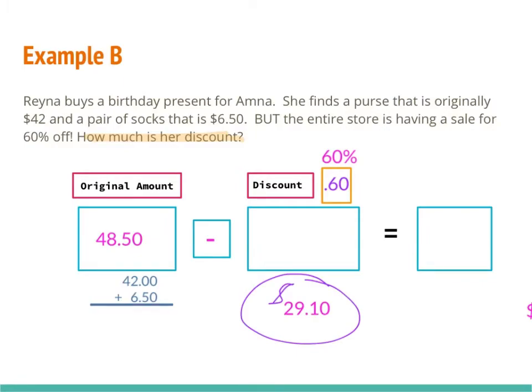It's very important that you read the problem carefully and figure out what it's asking for. If it asks for just the discount, don't do extra work — just write down the discount. If it asks for the total cost, then you're going to have to do the extra work. But make sure you're answering the problem; if you don't answer what they're asking for, you won't get the problem correct even if you do all of the extra work.